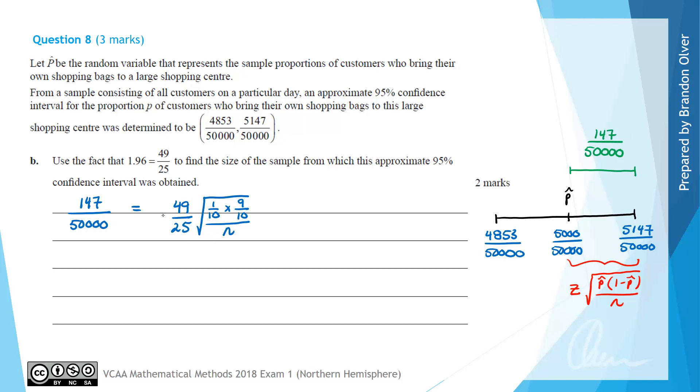Now we multiply both sides by 25/49, which will eliminate the fraction in front of the square root. So 147 divided by 49 leaves 3 on the top, and 25 divided by 50000 leaves 2000 on the bottom.